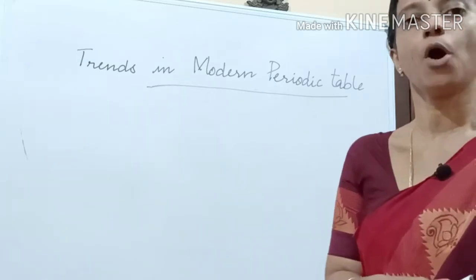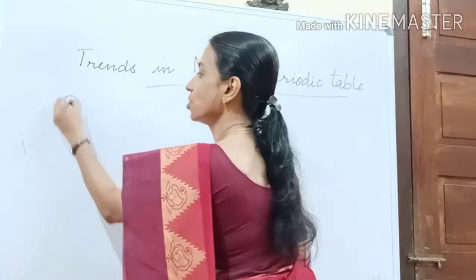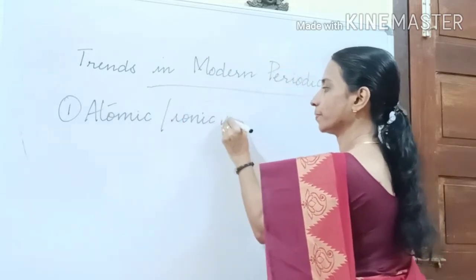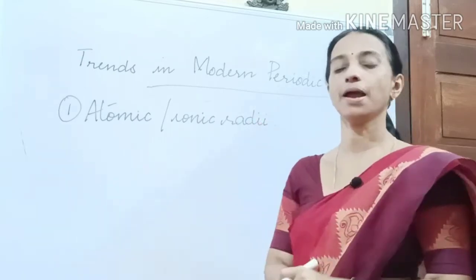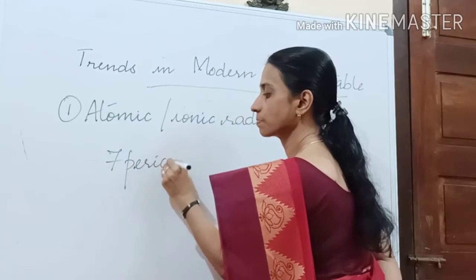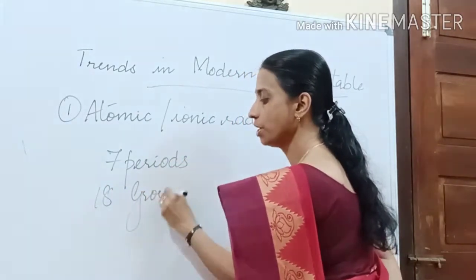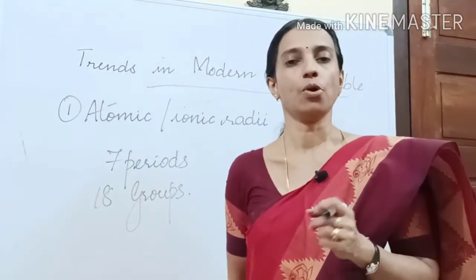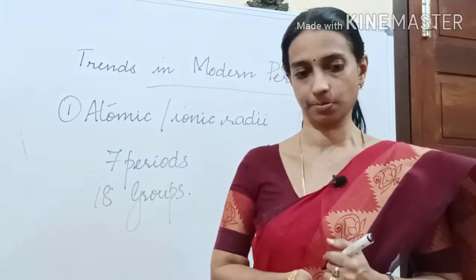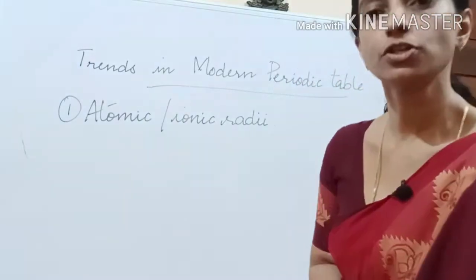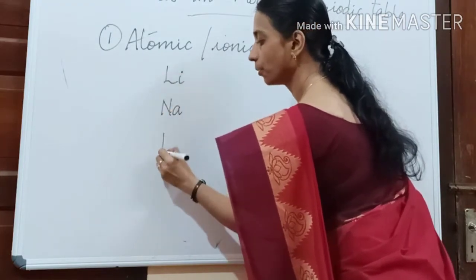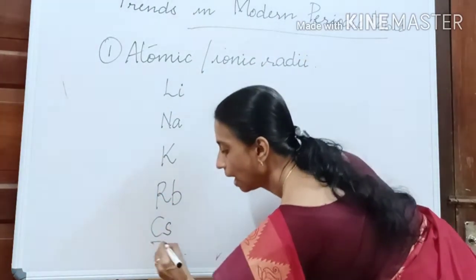The main trends in the modern periodic table. First, we shall see atomic or ionic radii, which gives an idea about the size of atoms. We have learned there are 7 periods and 18 groups. What will happen to the sizes when we move across a period and down a group? Take the case of the first group elements: lithium, sodium, potassium, rubidium, cesium, and francium.